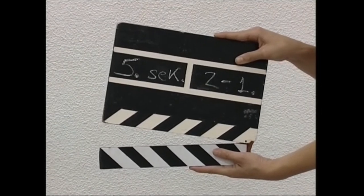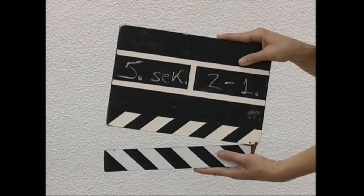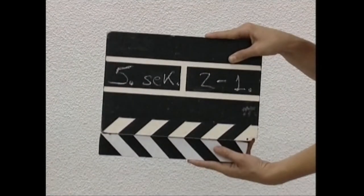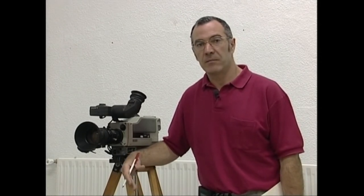Grabazioetan maiz entzuten dira honelakoak: 'Bosgarren sekuentzia, bigarren planoa, lehenengo.' Sekuentziaz ari direnean, gidoian idatzita dagoen eskenaz ari dira. Planoa grabatutakoaren zati erabilgarria litzateke; alegia, gero muntaian erabiliko dugun zatia. Orokorrean, elkarrizketa bat, ekintza bat edo eskena osoa izan daiteke.